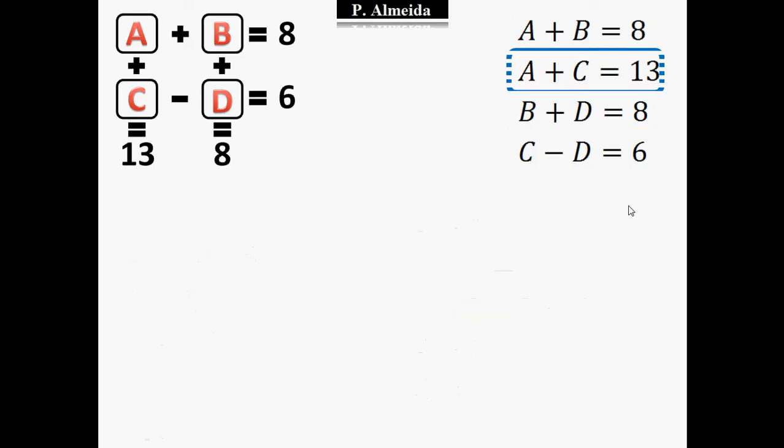So now I'm going to pick the second equation and the last equation. So A plus C equals 13, and C minus D equals 6. So A plus C equals 13, and C minus A equals 6. So what did I do here?